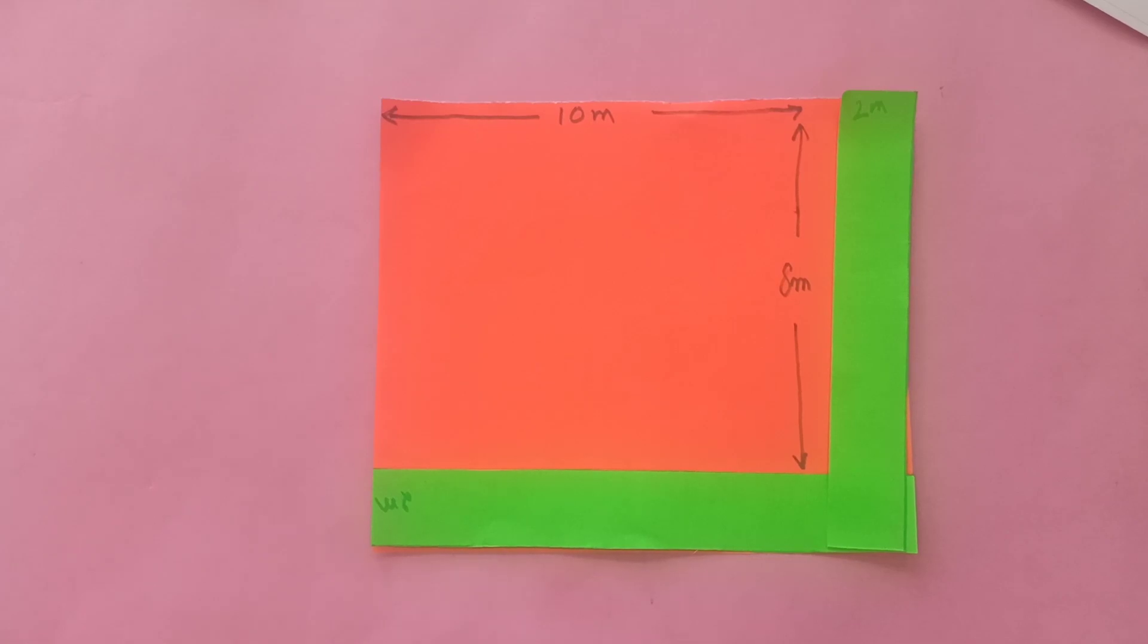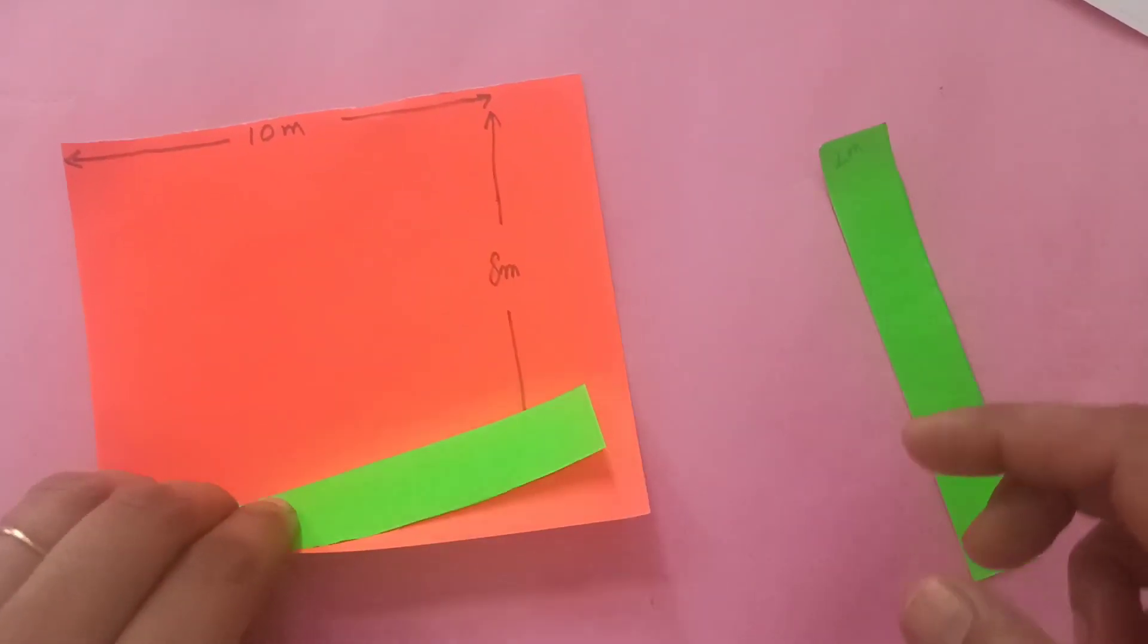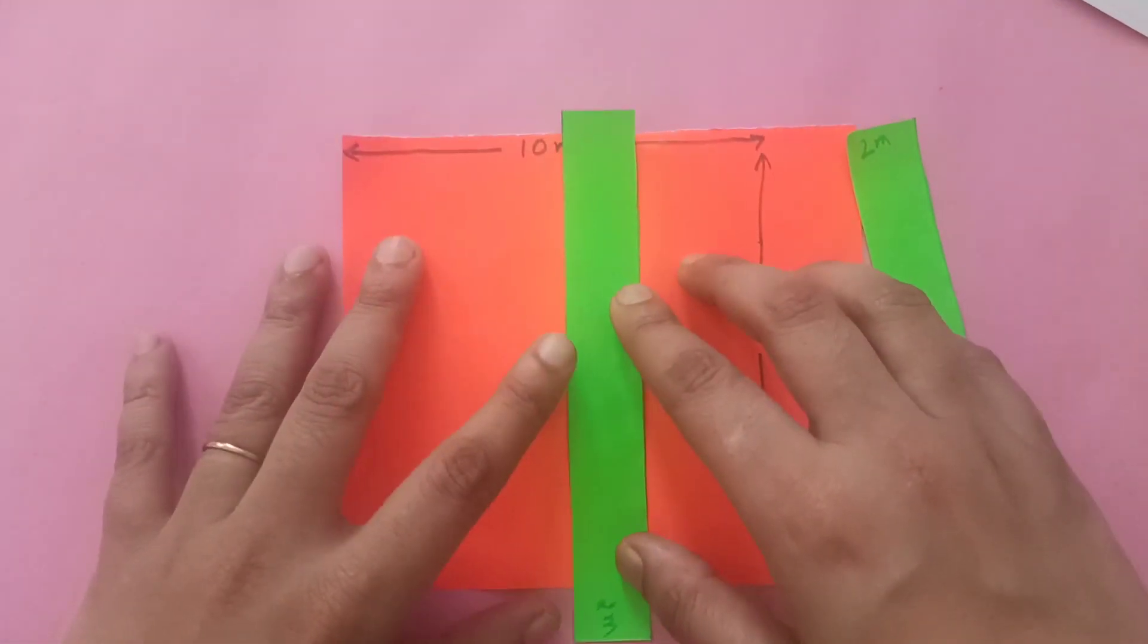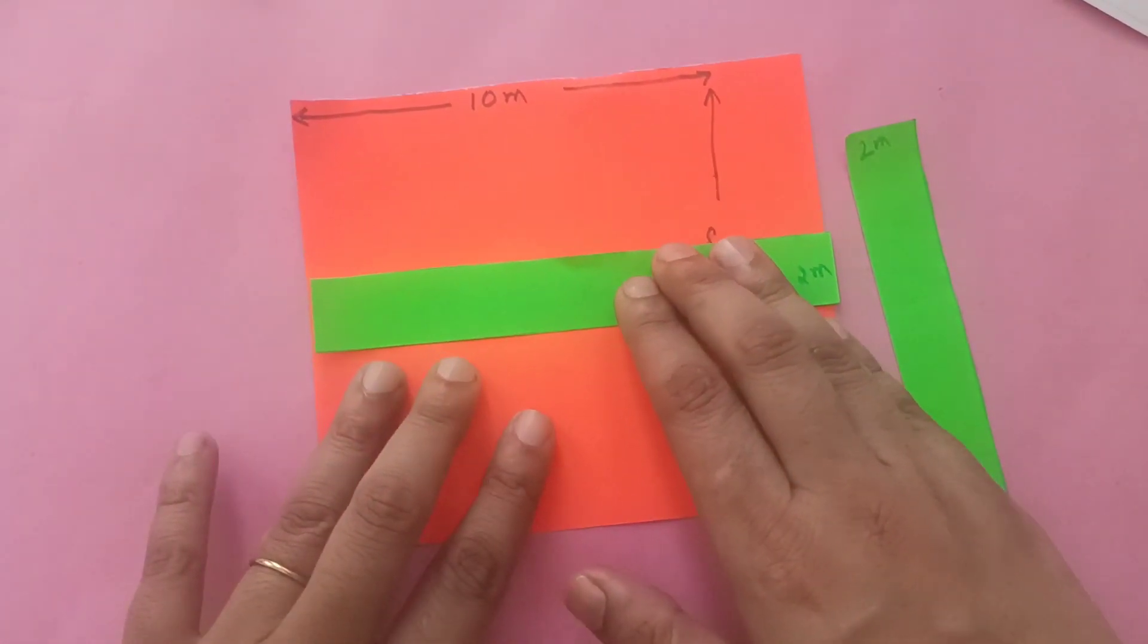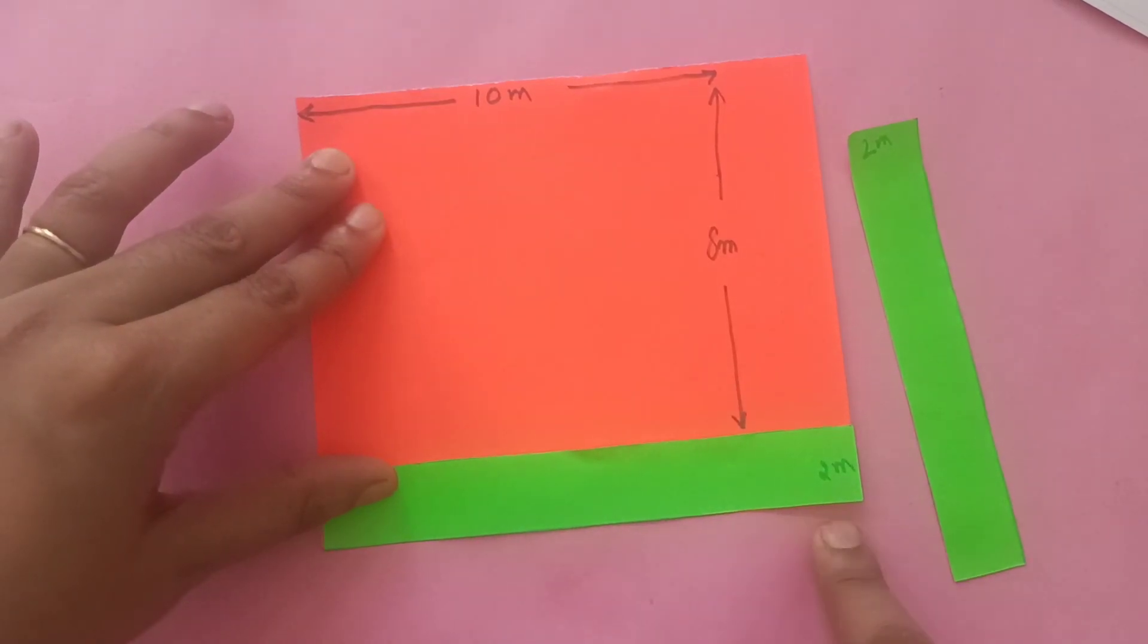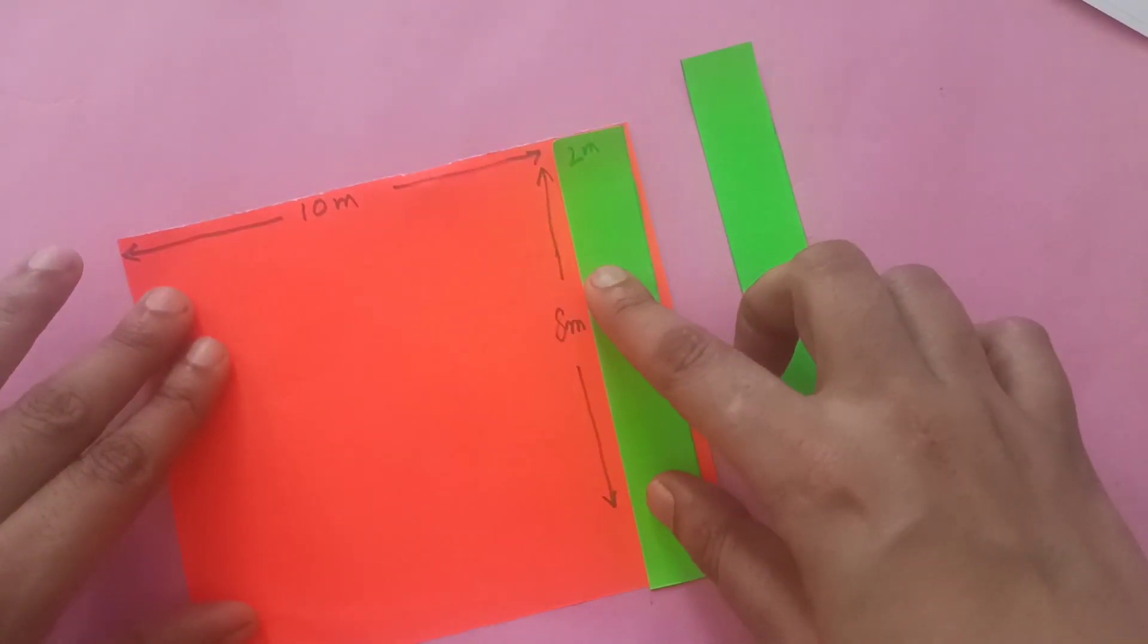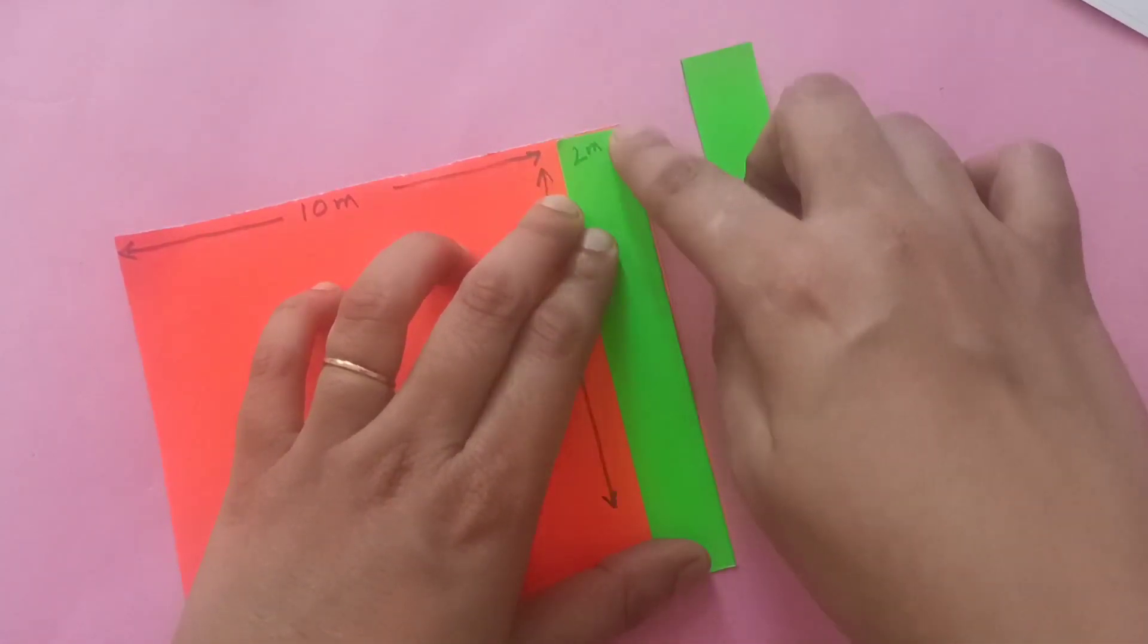Now let's discover the second way to solve this problem. Simply take away these strips. These strips were like this - this one was parallel to this, so that means its length is 12 and breadth is 2. So I keep it here. And this one was parallel to the other side, so that means its breadth is 2 and its length is 10.